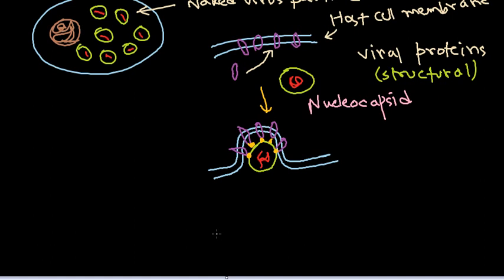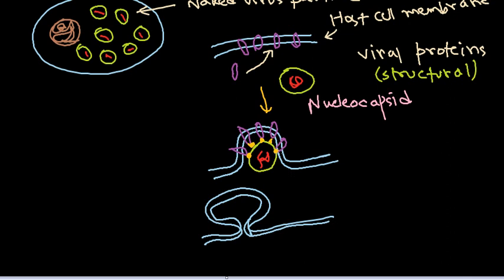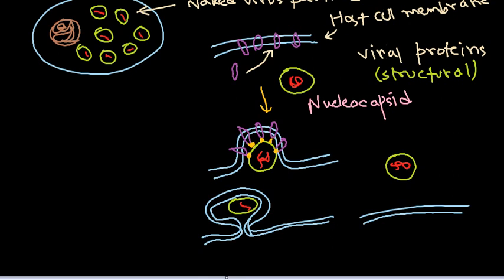After this, they take this particle along with them during this movement. So here we have our particle and genetic component. What we get is the virus particle with the nucleic acid material, and surrounding it will be the membrane — the cell membrane — with some of the viral proteins on its surface. This is called the enveloped virus.